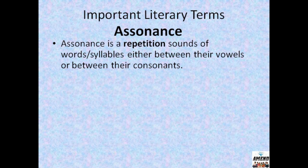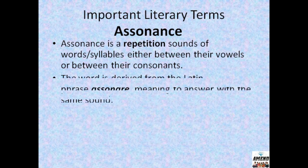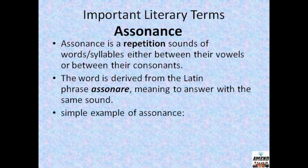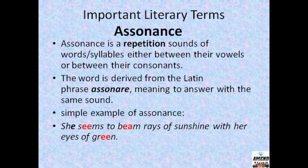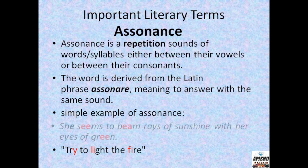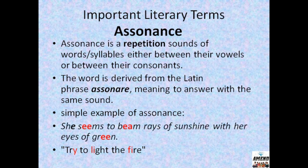Assonance is the repetition of sounds of words or syllables, either between their vowels or between their consonants. Assonance is a literary device used very widely throughout the world — it is the repetition of the same or similar vowel sound within words, phrases or sentences. The word is derived from the Latin phrase 'assonare' meaning 'to answer with the same sound.' Example: 'She seems to beam rays of sunshine with her eyes of green' — the long E sound repeats in 'seems,' 'beam,' and 'green.' This is what we call assonance.